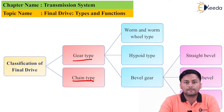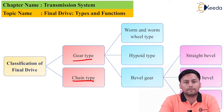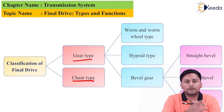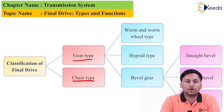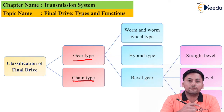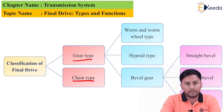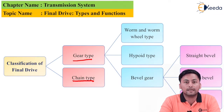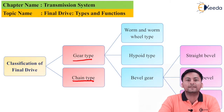The first classification is the chain type. You can take the example of a bicycle — whenever we need to transfer power from one place to another, we adopt a connecting mechanism. If we use a chain drive, whenever the front wheel rotates it takes the rear wheel along with it. However, the chain type is rarely used in automobile transmission because we have the option of the gear type.